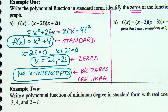One comment before moving on. Usually we say zeros and x-intercepts are the same — and they are, to an extent. However, up until this point we've only talked about real zeros. Zeros are solutions to the equation. X-intercepts are also usually solutions, but x-intercepts are only going to show you your real solutions.